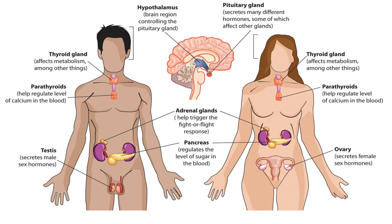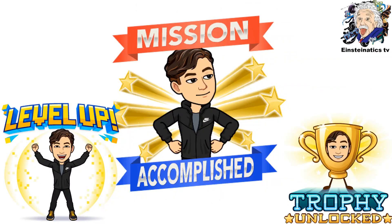Here is a quick look at the different types of endocrine glands and their functions: the hypothalamus is in the brain and controls the pituitary gland; the pituitary gland secretes many hormones, some of which affect other glands; the thyroid gland affects metabolism; the parathyroids help regulate calcium in the blood; the adrenal glands trigger the fight-or-flight response; the pancreas regulates blood sugar levels; and the main distinction between males and females lies in their sex glands — the testes for males and the ovaries for females.